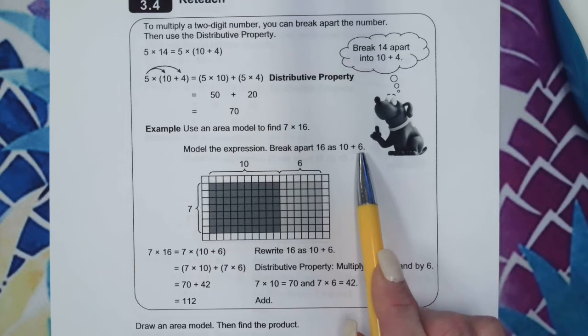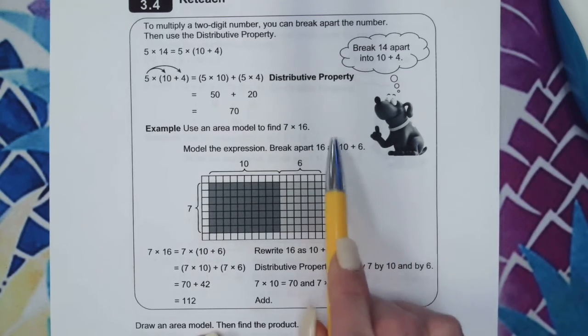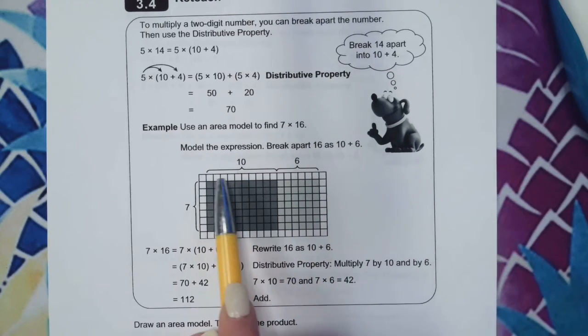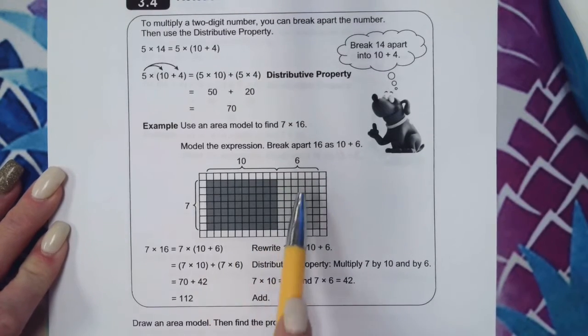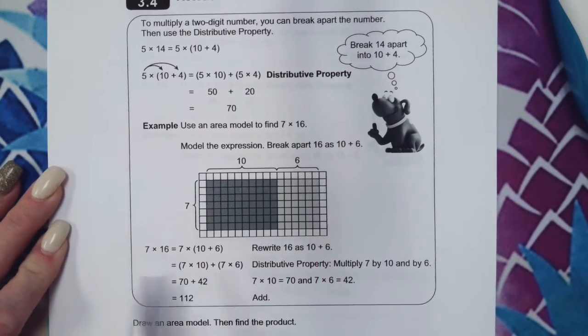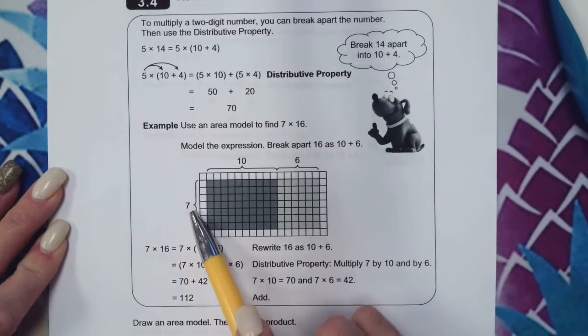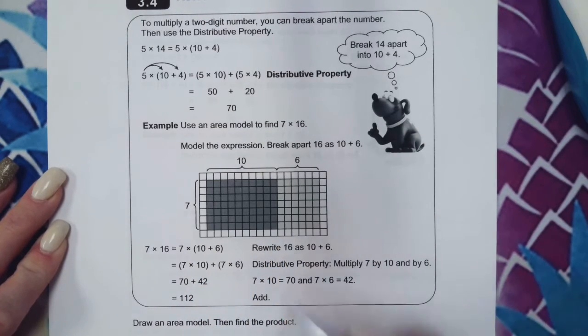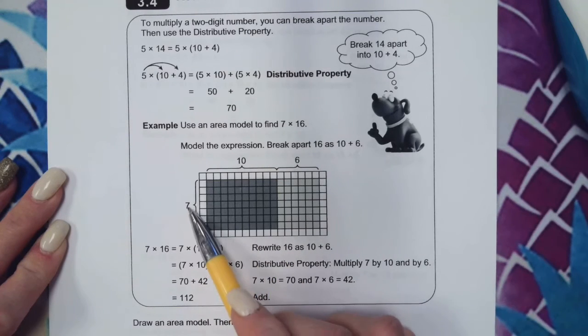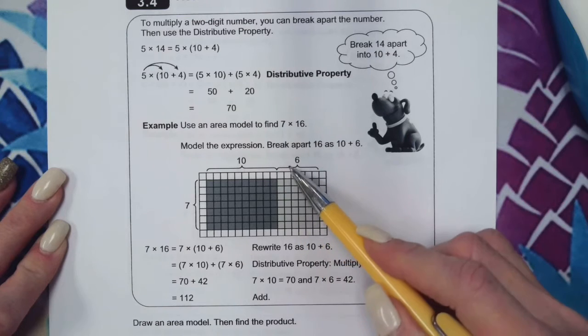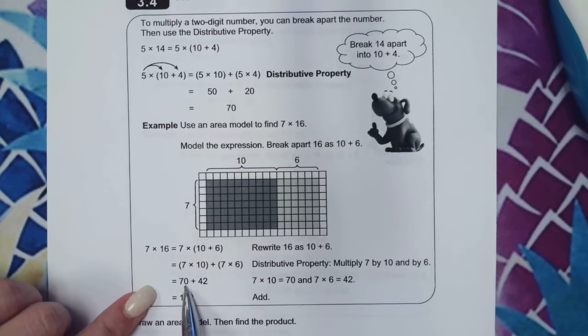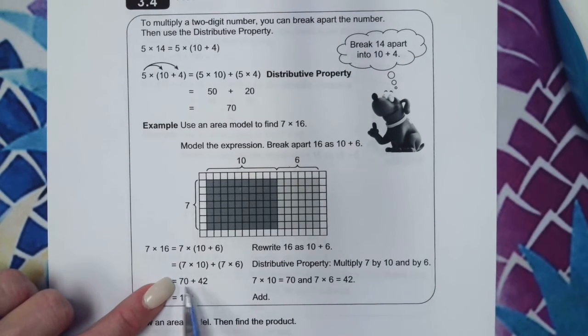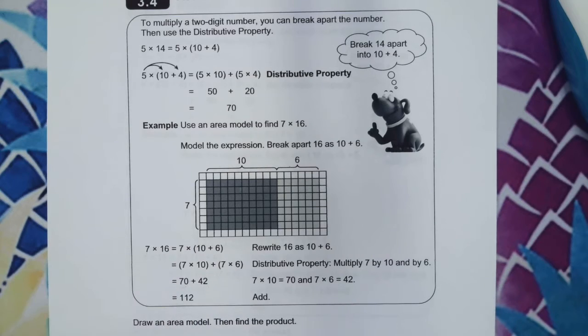We're breaking the 16 apart as 10 plus 6, and here you can see it represented in two different shades of gray: 10 and 6. So what we do now is multiply 7 times 10, which is 70, and then we multiply 7 times 6, which is 42. Then we add 70 plus 42 together to get our final product.